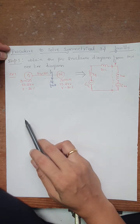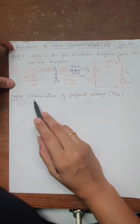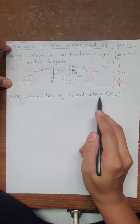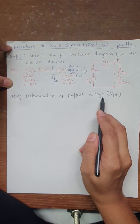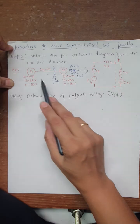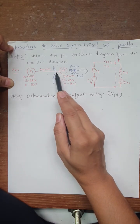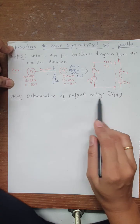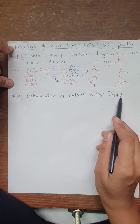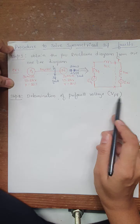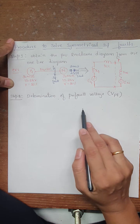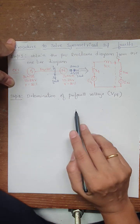Next we will see Step 2: determination of pre-fault voltage. Pre-fault voltage is the voltage present at the point before the occurrence of the fault, denoted as VPF. Consider a transmission line where a three-phase fault occurs — before the occurrence of the fault, the voltage present at that particular point is the pre-fault voltage. For the calculation of VPF we need to consider whether the system is loaded or unloaded.